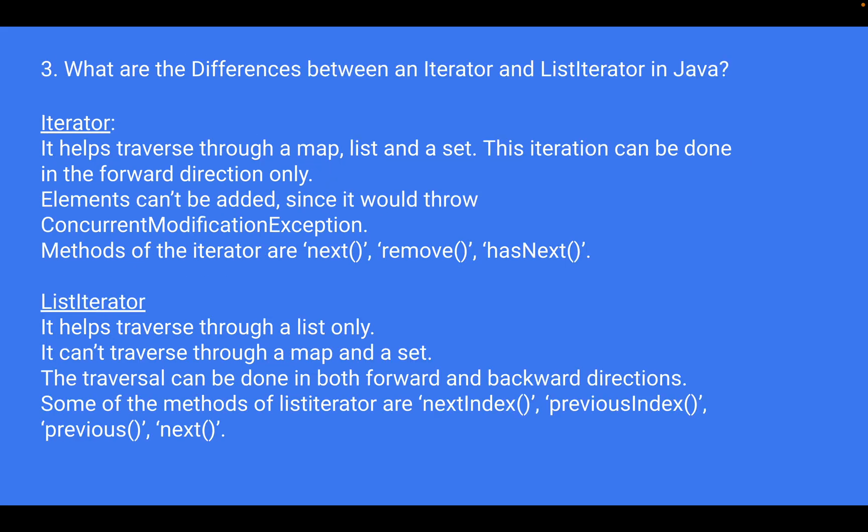Another question is: what are the differences between an Iterator and ListIterator in Java? Both are interfaces that allow you to traverse through elements in a collection, but there are key differences. An Iterator can traverse through a Map, List, and Set, but elements can't be added as it would throw a ConcurrentModificationException. Its methods include next, remove, and hasNext. A ListIterator can only traverse through a List and includes methods like nextIndex, previousIndex, previous, and next.